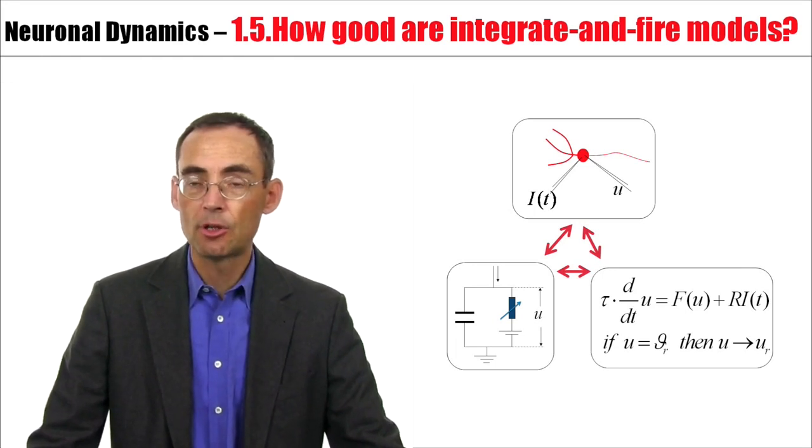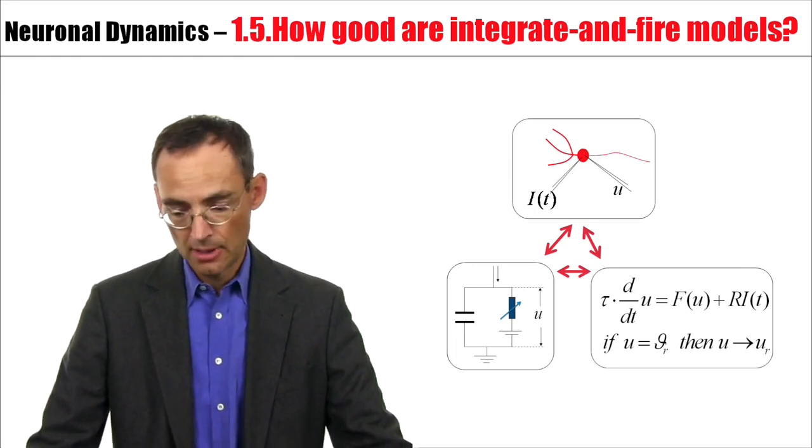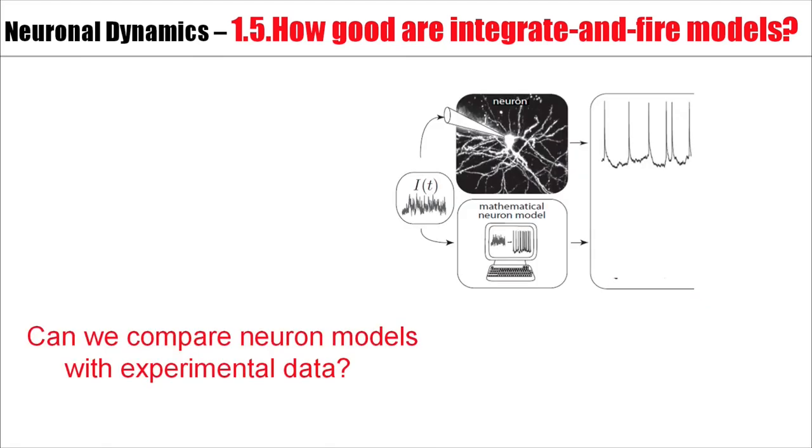Can we compare the model to experimental data? Ideally, from a model of this kind, I would expect that if I inject a current into a real neuron, I can record the response and use the response to optimize the parameters of my mathematical neuron model.